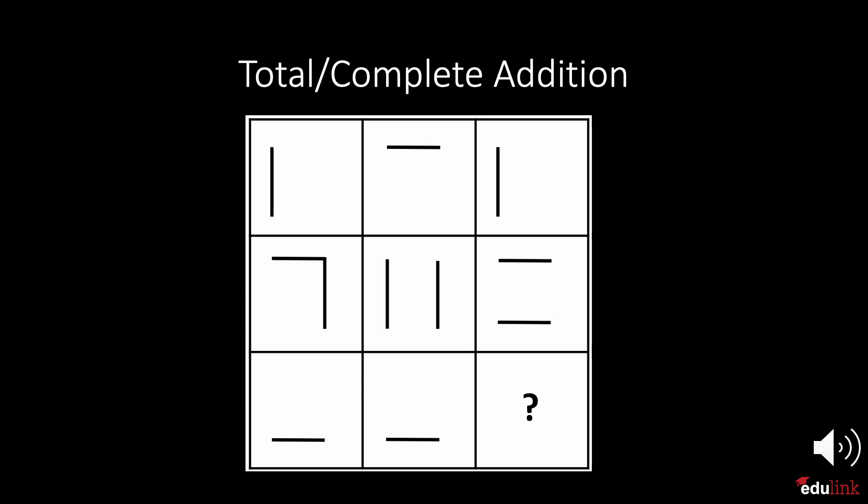Now we will look at patterns which are formed by adding all three boxes of a row or column. Therefore, the form in which they are all assembled is not presented. You must imagine it. This can be complicated. We will go through several examples to get an idea of how to complete these patterns. It can also be helpful to draw these examples out on a piece of paper.